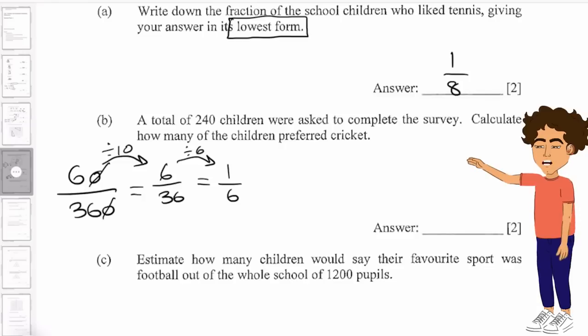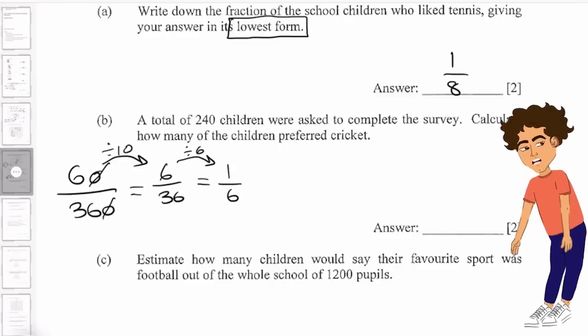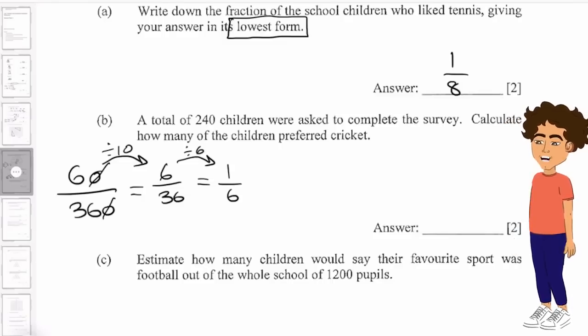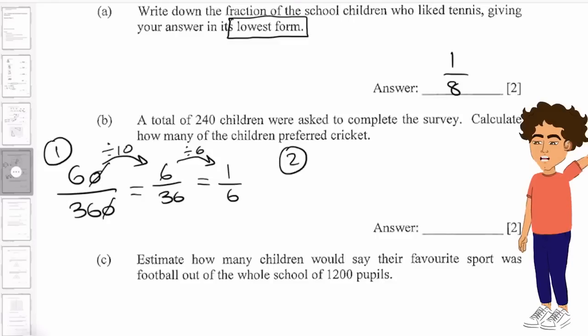So now what am I going to do with 1/6? Well, I'm going to go ahead and multiply this out by 240 children. And that then will give me the total amount of children that preferred cricket. So that's my step one.